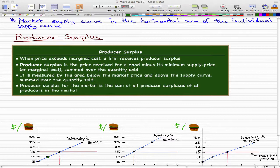When the price exceeds the marginal cost, a firm receives the producer surplus. That is kind of like profit. We can think of it as profit. For now, producer surplus is the price received for a good minus its minimum supply price or the marginal cost, summed over the quantity sold.